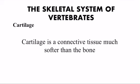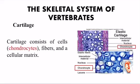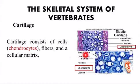Cartilage is a connective tissue much softer than bone. Cartilage consists of cells called chondrocytes, fibers, and a cellular matrix. In this diagram you can see the chondrocytes and the fibers and cellular matrix present here.